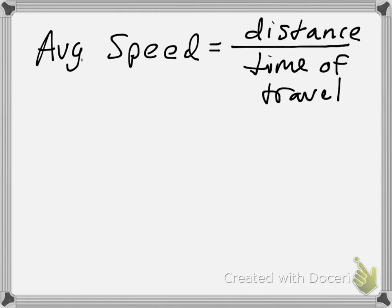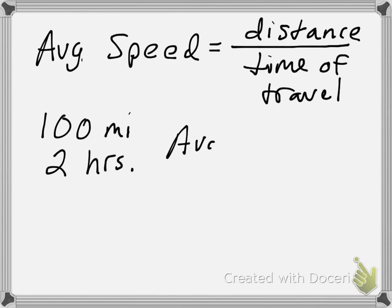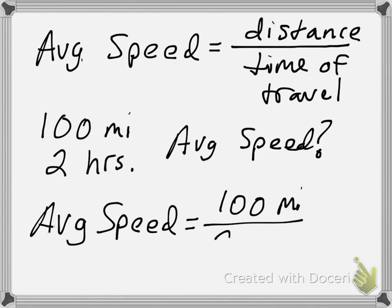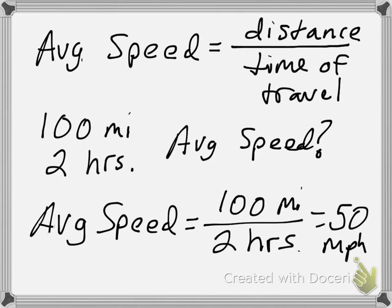This shouldn't really be anything new because we experience this all the time. For instance, let's say we take a 100-mile journey and it takes two hours to do it. What's the average speed for the trip? Just plugging into our formula, the average speed is 100 miles divided by two hours, which is just 50 miles per hour, or 50 mph.